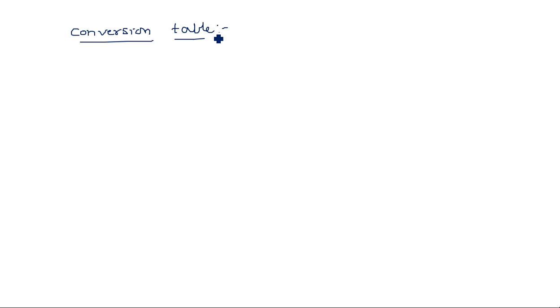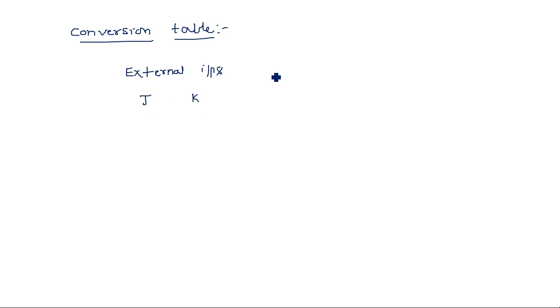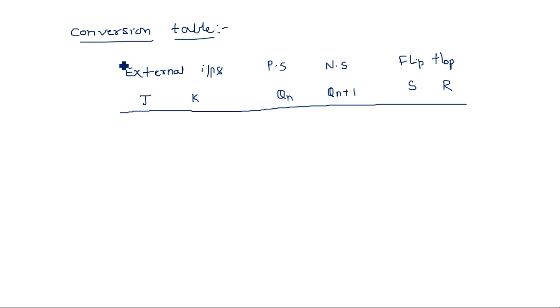The conversion table is very important. In the previous video I explained the excitation tables along with truth tables — that excitation table is very important here. The conversion table consists of external inputs, which are the inputs of the flip-flop you are converting to — in this case J and K — followed by the present state Qn, next state Qn+1, and the flip-flop inputs S and R.